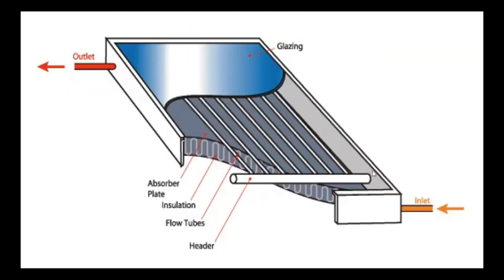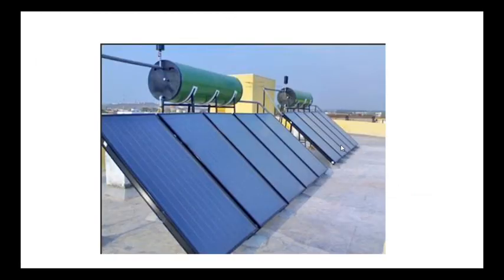This is the overview diagram of a flat plate collector. Here we have the inlet with cold water and the outlet with hot water. There are a number of flow tubes and an absorber plate with insulation. The header pipe connects a number of tubes. In a series arrangement, we have a tank with cold water input and hot water output through multiple flat plate collectors.